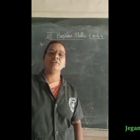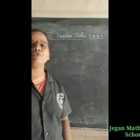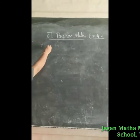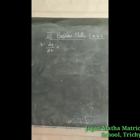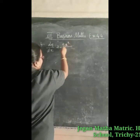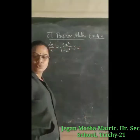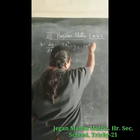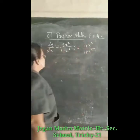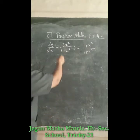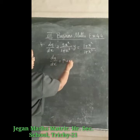Hello students. Today we are going to see 12th standard business mathematics, Chapter 4, Exercise 4.4, fourth question: dy/dx plus 3x² divided by (1 + x³) into y equals (1 + x²) divided by (1 + x³). It is in the form of dy/dx + py = q.